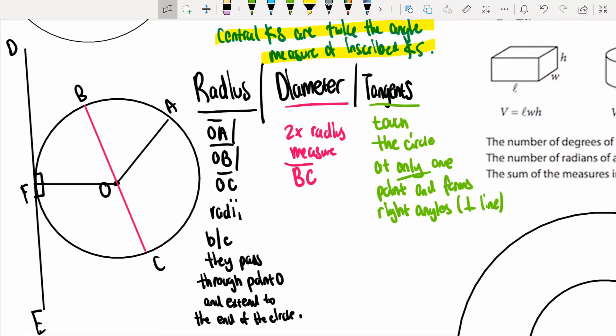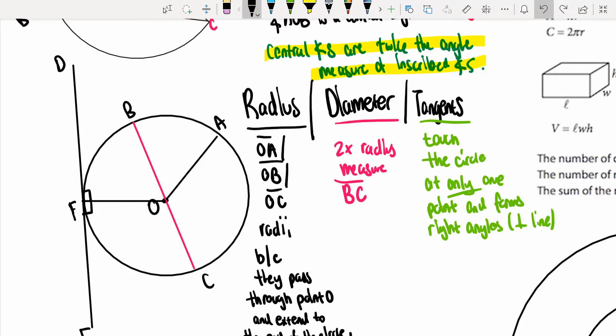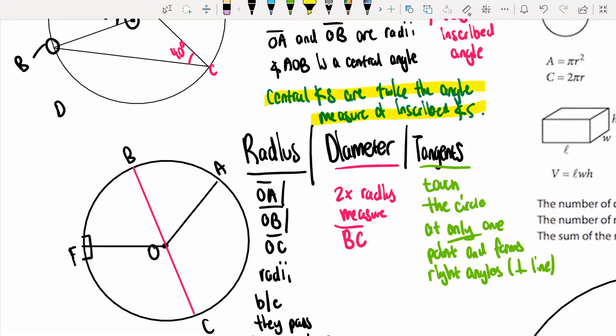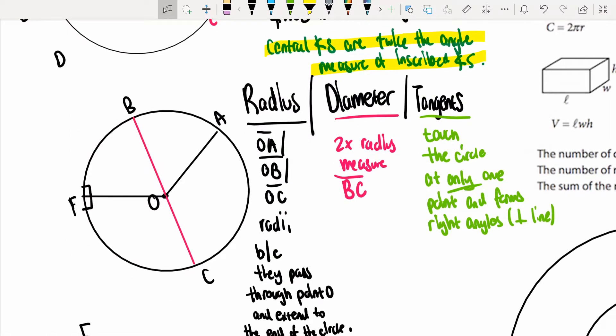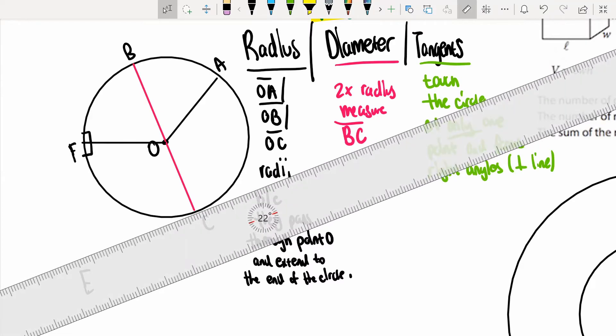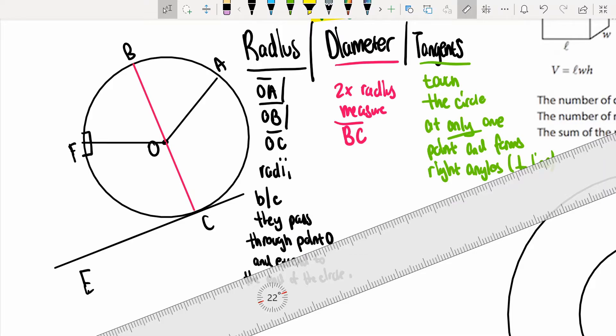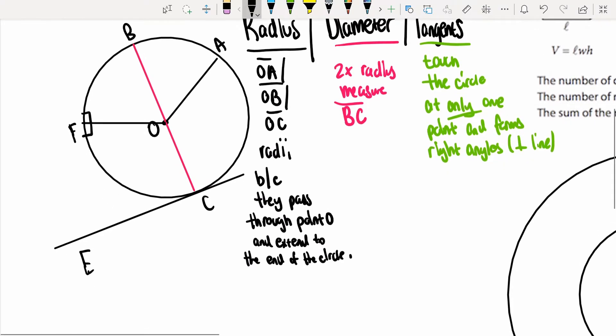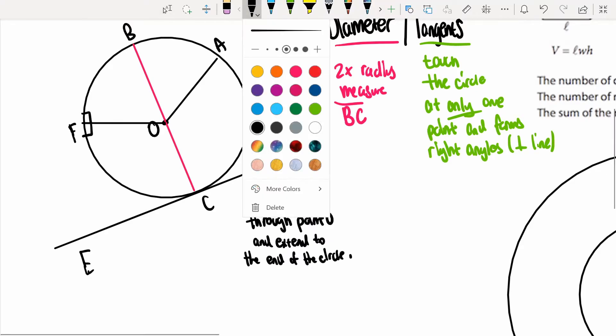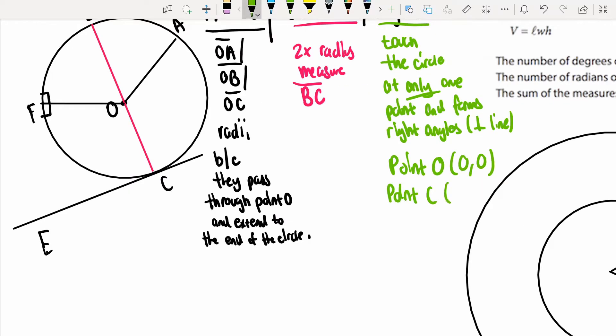Also, on SAT, they might ask you to find the slope of the tangent line. If they give you a point on the circle, if C is the only point at which this line touches it, then it would qualify as a tangent line. Let's say point O is at the origin, point O is (0,0). And let's say point C is (3, -2) since it's under the origin.